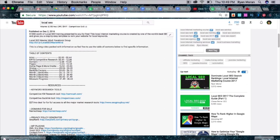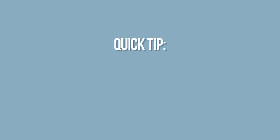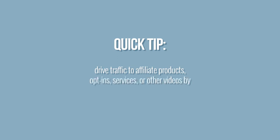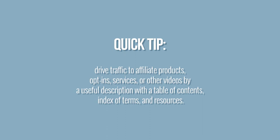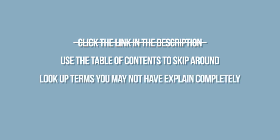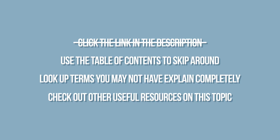Content: you have a total of 5,000 characters to work with in the description and I'd suggest using as much of it as possible. I edit down the video script we previously wrote to its essential concepts, aimed at making this useful content in and of itself. Quick tip: you can drive lots of traffic to affiliate products, opt-ins, services, or other videos by having a useful description with a table of contents, index of terms, and resources. These components provide reasons for you to call the viewers' attention to the description section. Instead of just saying 'click the link in the description,' you can subtly direct them to use the table of contents to skip around, look up terms, or check out other useful resources on the topic — a great way to improve impressions of your money link while not overselling.